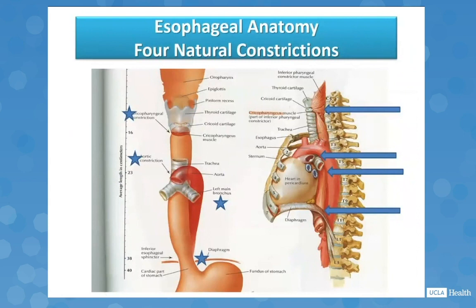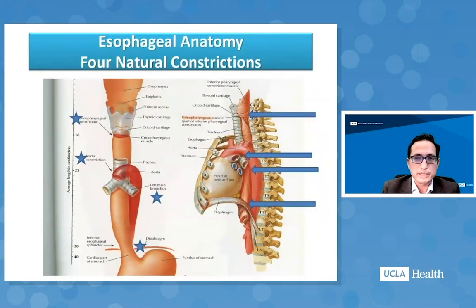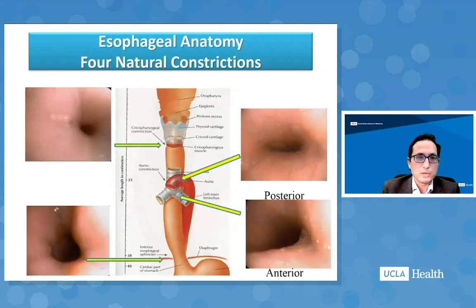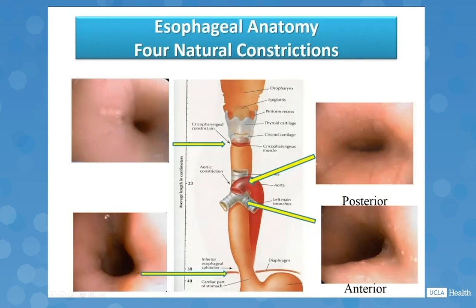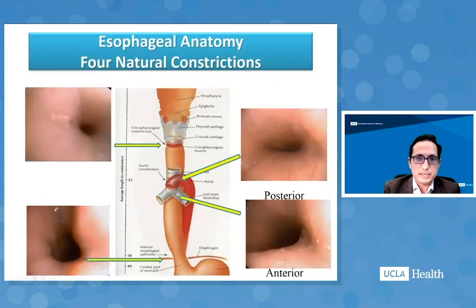When doing a transnasal esophagoscopy, you encounter four natural constrictions: the cricopharyngeal constriction at the top of the esophagus, the constriction at the level of the aorta, the constriction at the level of the left main stem bronchus, and finally at the level of the lower esophageal sphincter and the diaphragm. Knowing these constrictions helps quite a bit as you perform the procedure. Unlike sedated esophagoscopy, you are facing the patient, so the anterior is toward the bottom of the picture and posterior toward the top.